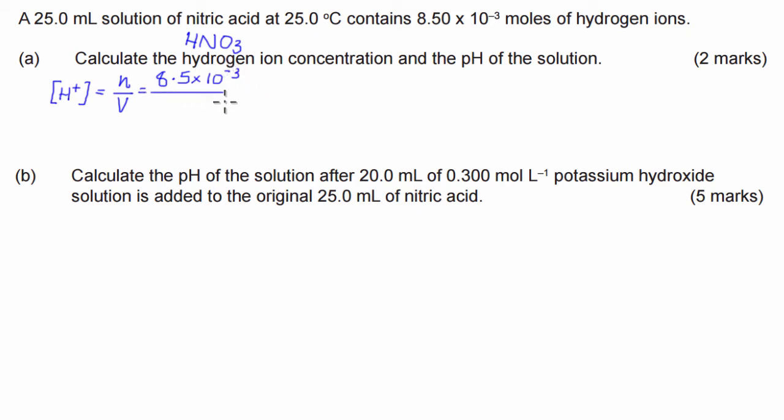And that's divided by the volume. Now we have to make sure the volume is in litres. So that's going to be 0.025. Now a quick plug that into the calculator. That's going to give us 0.34 moles per litre. Great. So that's the first part of the question done. So that's the hydrogen ion concentration done.